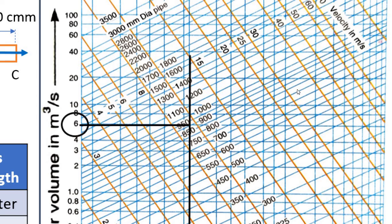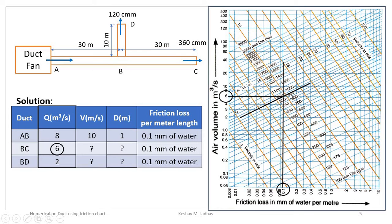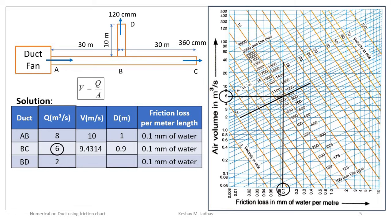Zooming into the chart, from the intersection point we can see the constant diameter line passing through corresponds to 900 mm, which equals 0.9 meters. So diameter of duct section BC equals 0.9 meters. To calculate velocity: V equals Q divided by cross-sectional area equals 6 divided by (π/4 × 0.9²), giving velocity of air through duct section BC equals approximately 9.43 m/s.